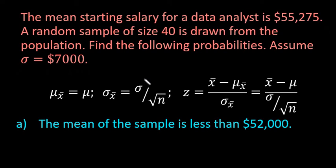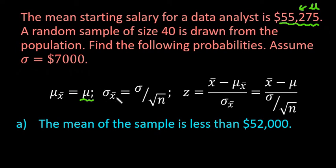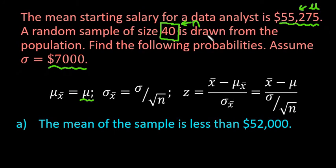The first thing we need to do is find the mean of our sampling distribution. According to the central limit theorem, the mean of the sampling distribution of the sample mean is equal to the mean of the population — in this case, $55,275. The standard error of the sampling distribution is equal to the standard deviation of the population divided by the square root of the sample size. So sigma is $7,000 and our sample size is 40.